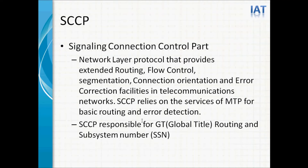SCCP defines how a message should be routed using the address indicator, which contains a routing indicator, global title indicator, subsystem indicator, and point code indicator. It also provides five classes of protocols: Class 0 is basic connectionless, Class 1 is sequenced and connectionless, Class 2 is basic connection-oriented, Class 3 is flow control connection-oriented, and Class 4 is error recovery and flow control connection-oriented.